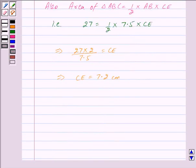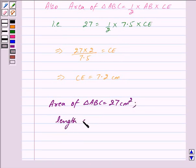Thus our answer is: area of triangle ABC equals 27 cm squared and length of CE equals 7.2 cm.